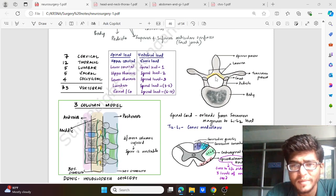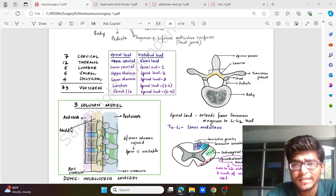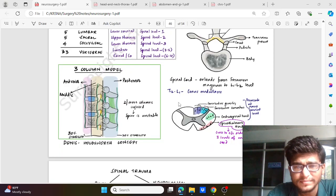These are much better diagrams where we can see the vertebral body, the pedicles, the facet, the transverse process, the lamina and spinous process. The spinal cord extends from the foramen magnum to L1-L2 level, the border of L1-L2 level, and the conus medullaris extends up to T12-L1 level.